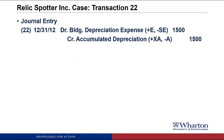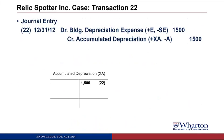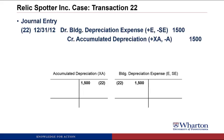We post this journal entry to T-accounts, creating a T-account for accumulated depreciation as a contra asset with a credit balance, and a T-account for building depreciation expense.